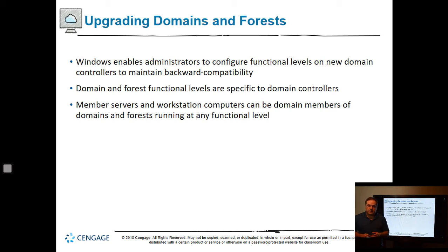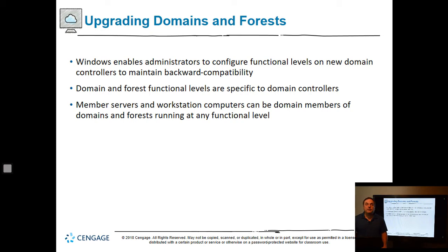Windows enables administrators to configure functional levels on new domain controllers to maintain backward compatibility. Domain and forest functional levels are specified to domain controllers — you always pick whatever your oldest domain controller is and set it to that level. Otherwise, if you set a 2012 forest and domain functional level, a 2008 domain controller is not going to work anymore.